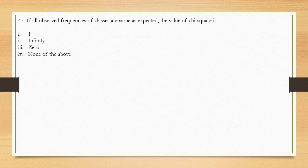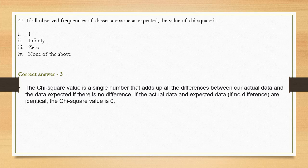Question number 43: If all observed frequencies of classes are equal to expected frequencies, the value of chi-square is — options are infinity, zero, and none of the above. The correct answer is option 3, zero. Chi-square is a number that adds up all the differences between actual and expected data. If there is no difference, chi-square will be zero.